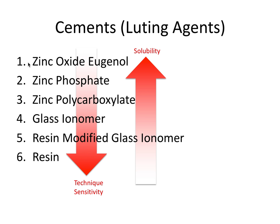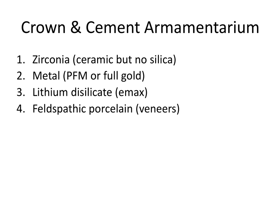Here again are our six cements. As we go down from one to six, the cements are generally better quality but a little more difficult to use—I use the term technique sensitivity. Resin is more difficult because it requires better isolation, light curing, etching, and silane application. As we go in the other direction, there's a trend toward higher oral solubility and lower strength. Those are the two big trends to remember when thinking about these six cements.